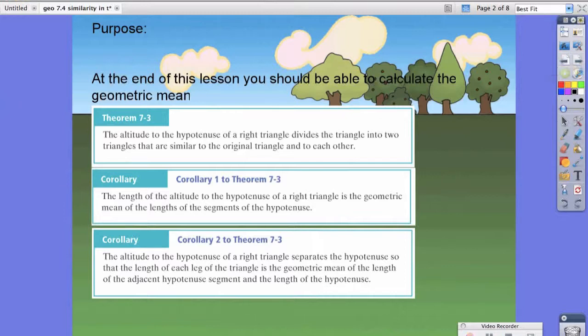Let's start with a couple theorems and corollaries. Theorem 7.3 states the altitude to the hypotenuse of a right triangle divides the triangle into two triangles that are similar to the original triangle and to each other. I know that sounds a little complicated, but we're going to get to that on the next slide.